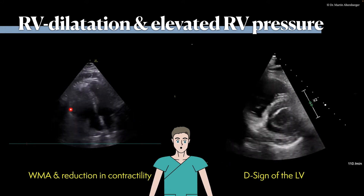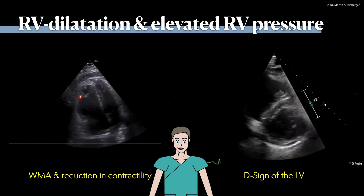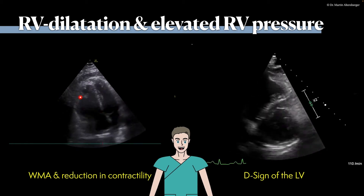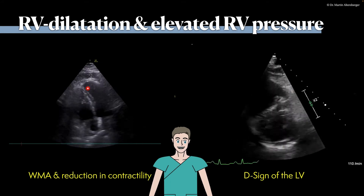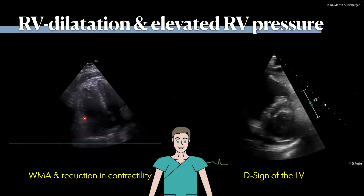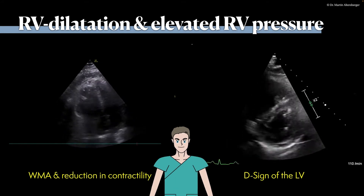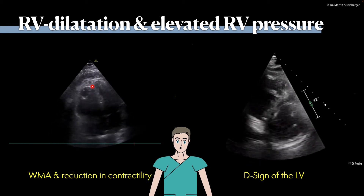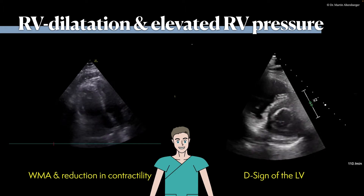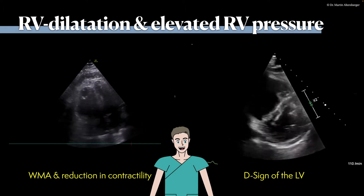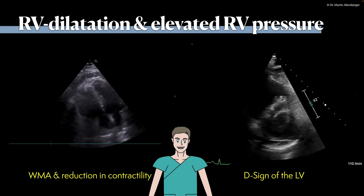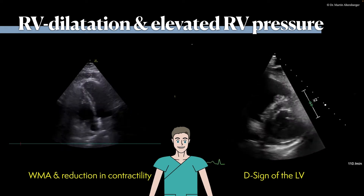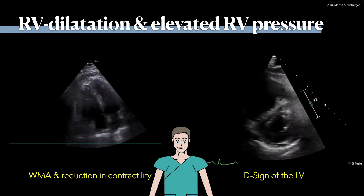We do see wall motion abnormalities of the right ventricle — especially the mid portions, which are akinetic or even dyskinetic. The apical and basal portions are contracting a bit better. Especially the apical portions are dragged towards the left ventricle, which is the contraction of the left ventricle. This is the so-called McConnell's sign.